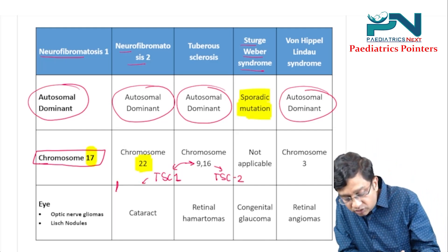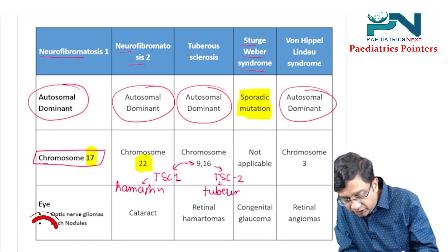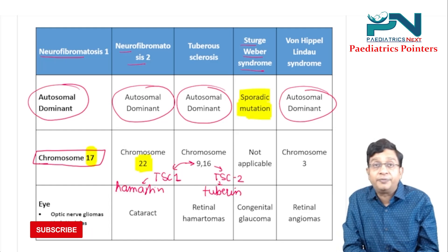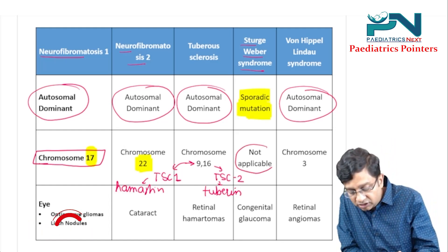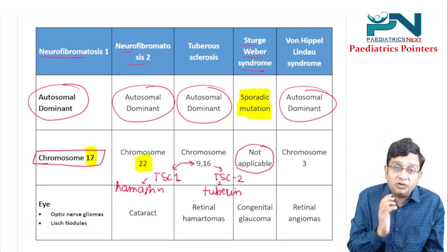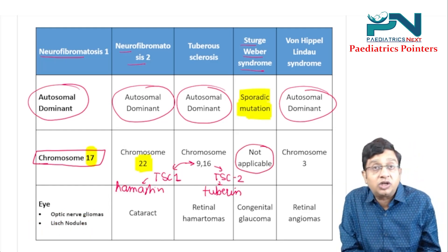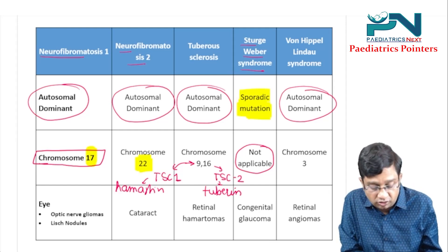TSC1 codes for the protein hamartin, and TSC2 codes for the protein tuberin. In Sturge-Weber, chromosome number is not applicable because it is a sporadic mutation. In VHL, chromosome number 3 is involved.